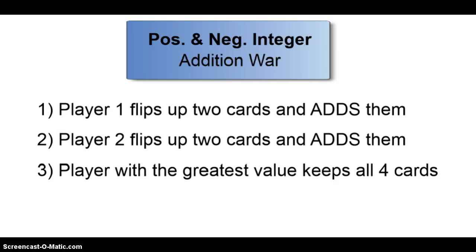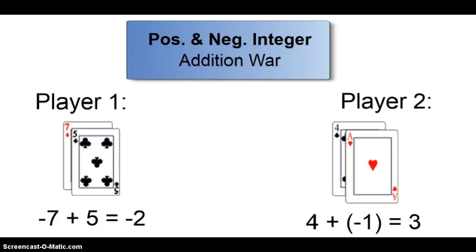Now let's take a look at the game. Three steps: player one flips up two cards and adds them, player two flips up two cards and adds them, and the player with the greatest value keeps all four of the cards.